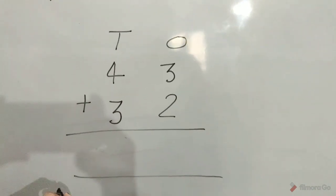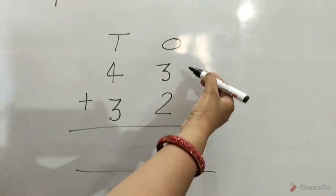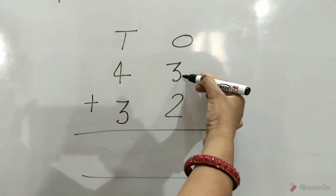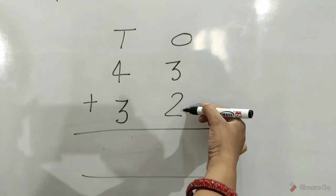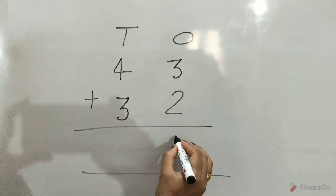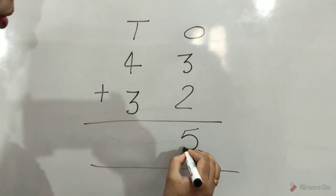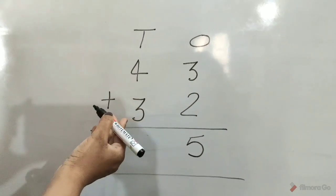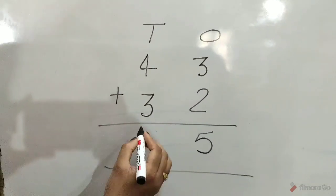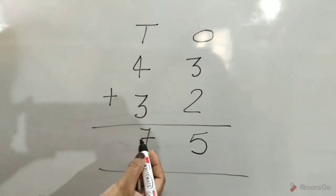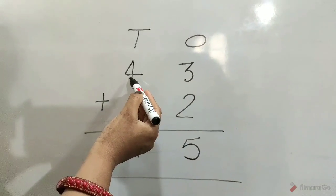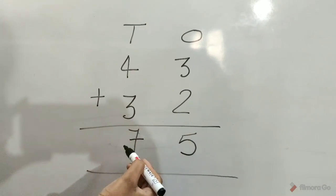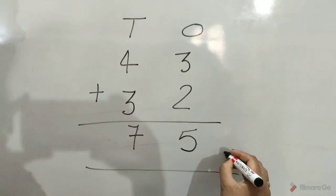Children, let's solve. We add ones first. So, 3 ones plus 2 ones is equal to 5. 4 tens plus 3 tens is equal to 7. So, 43 plus 32 is equal to 75. Answer.